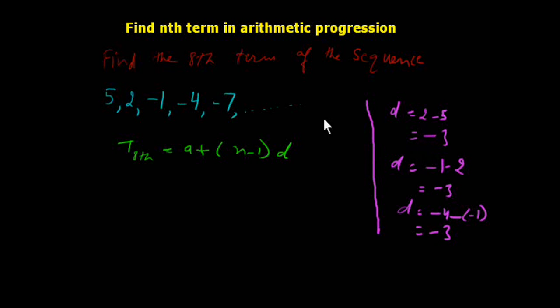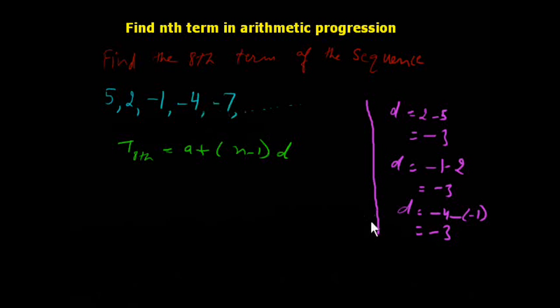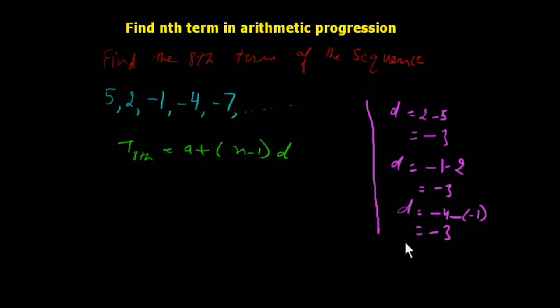For example: 2 minus 5 equals minus 3, minus 1 minus 2 equals minus 3, minus 4 minus minus 1 equals minus 3, and minus 7 minus minus 4 is also minus 3. So we will calculate the 8th term's value.